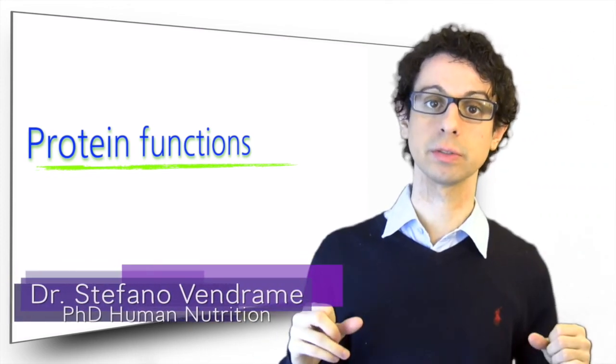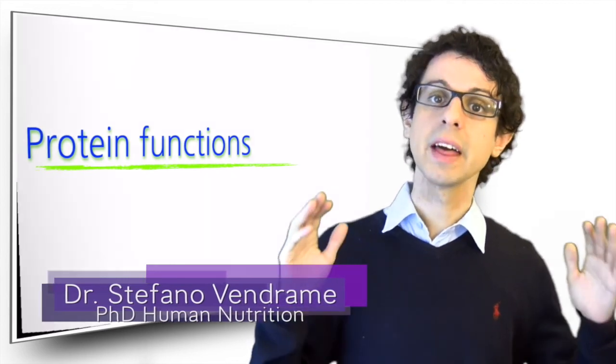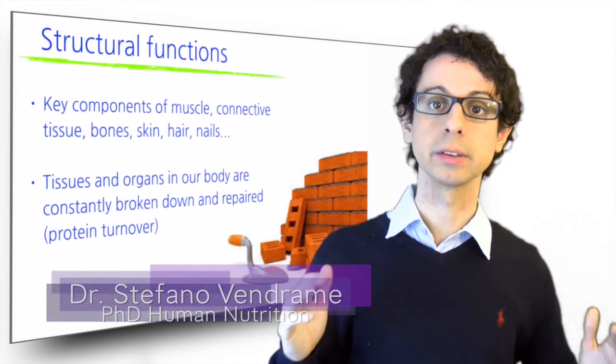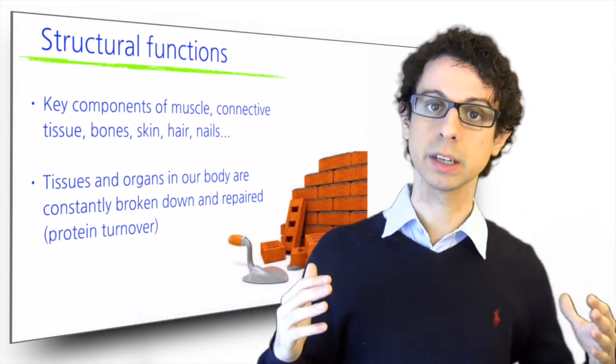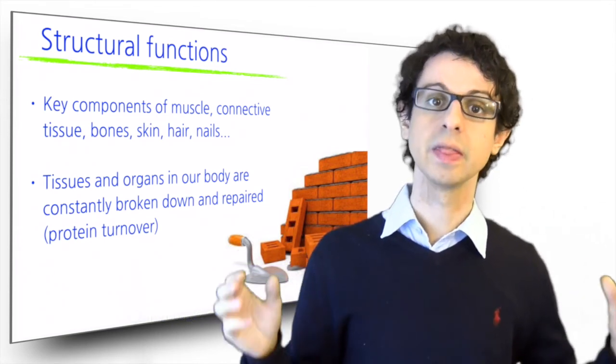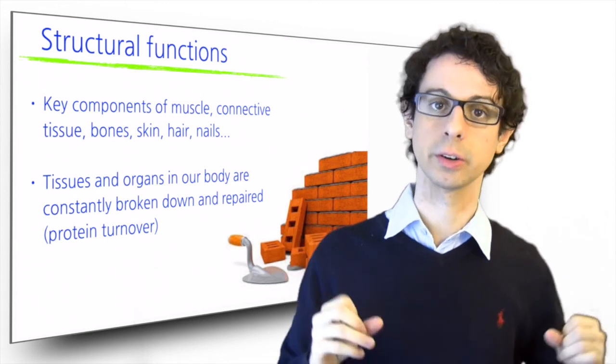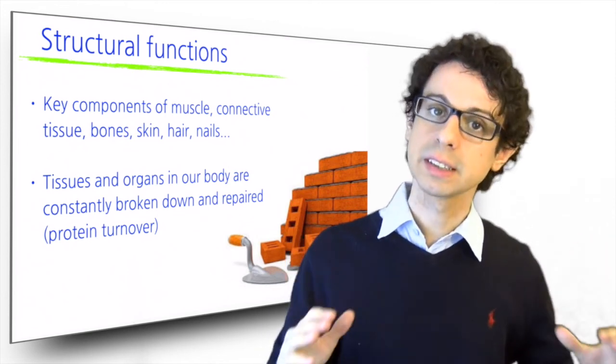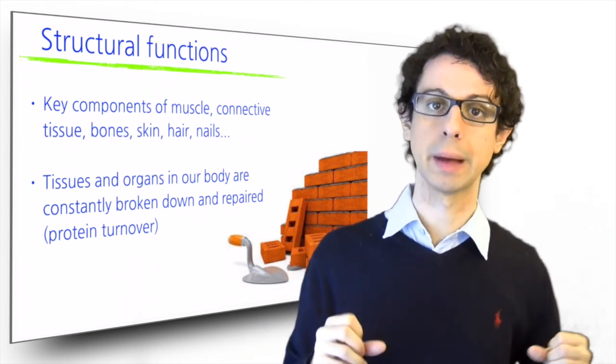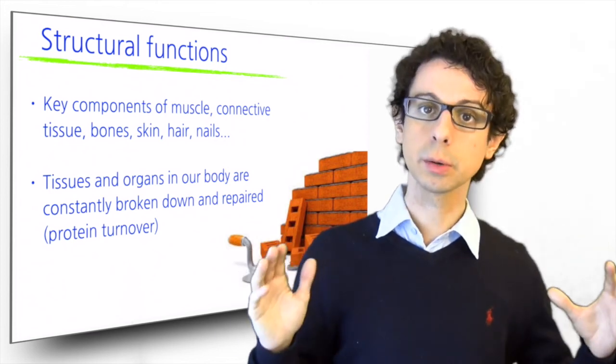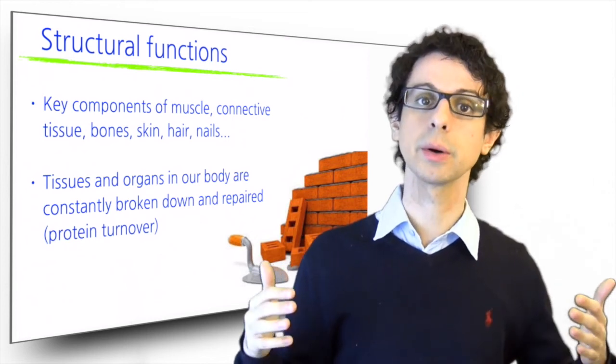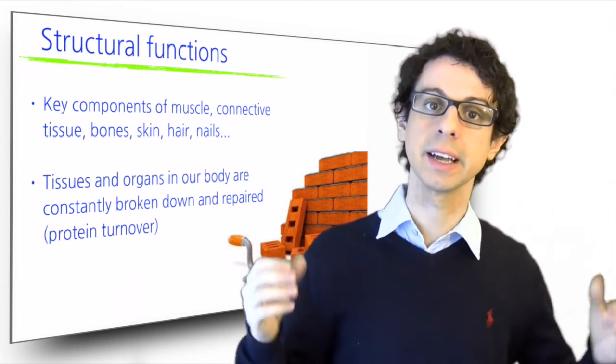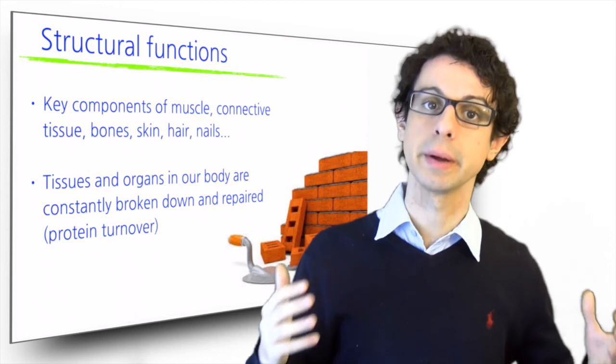We already know that proteins have important structural functions in our body. They are key structural components of all of our tissues and organs. The most abundant protein in our body is collagen, the main ingredient of all our connective tissues: our skin, our tendons, our bone matrix. But once we use protein to build all these structures, they will not stay there forever. Tissues and organs in our body wear and tear on a daily basis and need to be repaired.